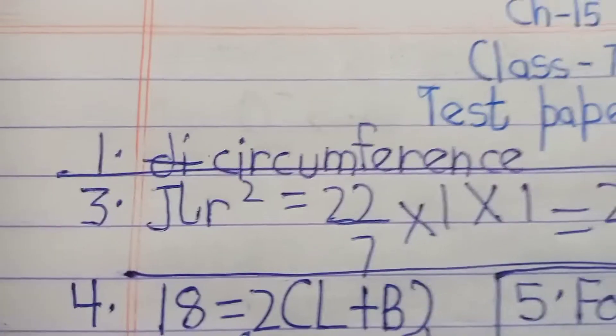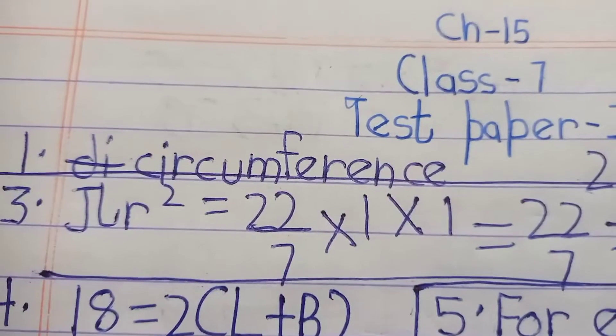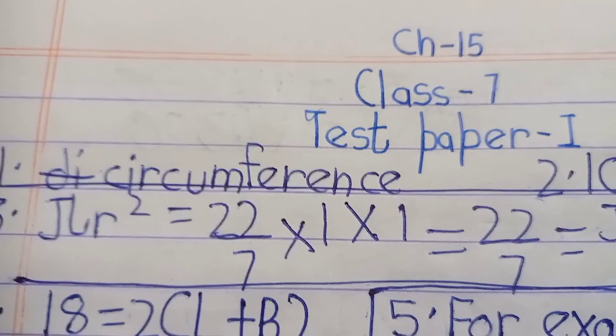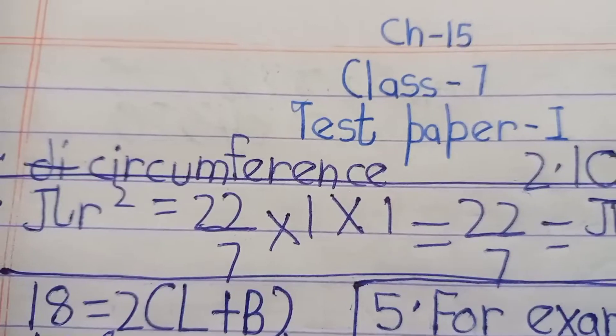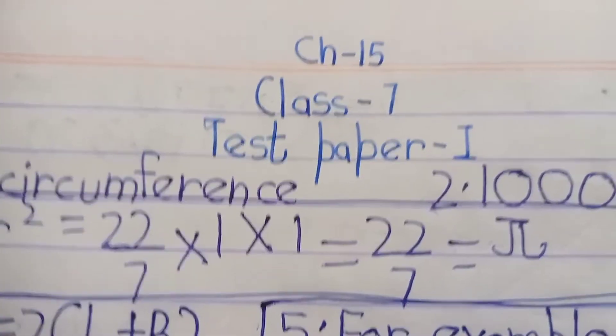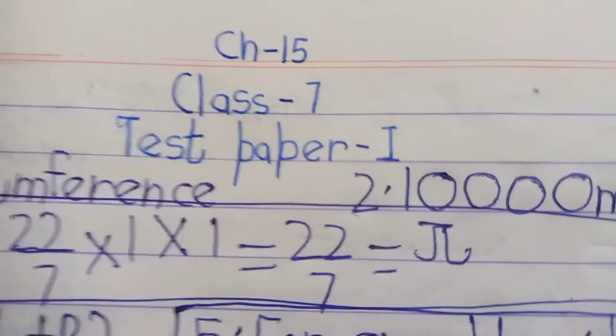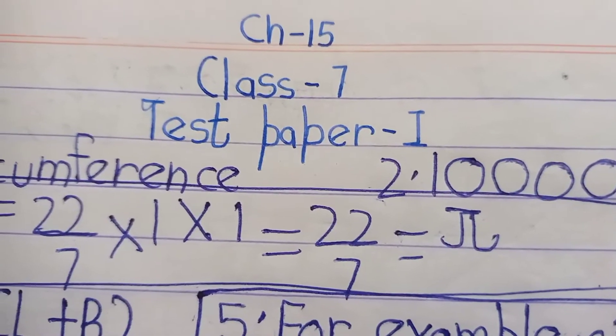The area of a circle of radius one centimeter: area equals π r squared, which is 22 over 7 multiplied by 1 multiplied by 1, which equals 22 over 7, so the answer is π. Now we move to Section B, where each question carries two marks.